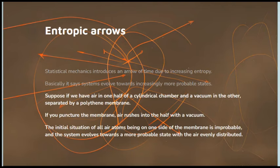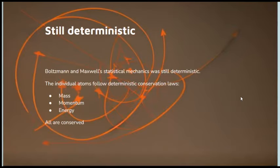And air rushes into the half with the vacuum. Can you hear me again? So I'm assuming it's working again. The air rushes in. That's because the initial situation was improbable and the situation moves to the more probable state where the air is equally distributed. And that's an extreme example, but it's an example on which all our internal combustion engines and similar devices depend.